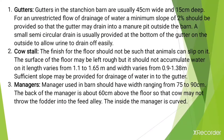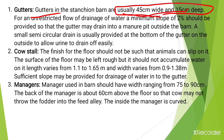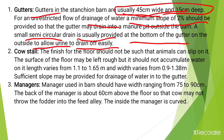Now let's see the different components of the stanchion dairy barn. The first component is gutters. Gutters in the stanchion barn are usually 45 centimeters wide and 15 centimeters deep. For unrestricted flow and drainage of water, a minimum slope of about 2% should be provided. A small semi-circular drain is usually provided at the bottom of the gutter on the outside to allow urine to drain off easily.